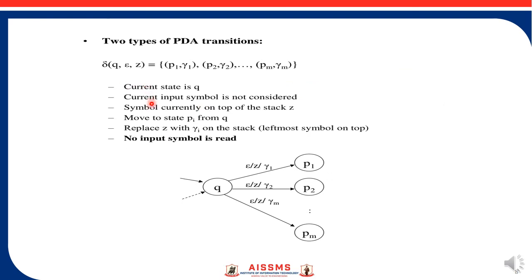To generalize the transition function: we have one state Q, and upon certain inputs we move to different states. Q is the current state; the current input symbol is not considered — it is epsilon or an empty string — and Z indicates the top of the stack. We move to the next state P1 and push a new symbol gamma1 on top of the stack, replacing Z with gamma1. This epsilon means there is no input symbol to read. This is how the transition function of the PDA is represented.